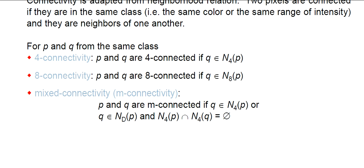We also have mixed connectivity or M-connectivity, which is very important. P and Q are M-connected if: Q belongs to the four neighbors of P, OR Q belongs to the diagonal neighbors of P, AND the four neighbors of P intersected with the four neighbors of Q is equal to null (empty set).